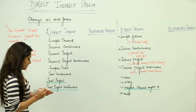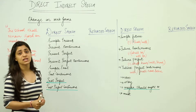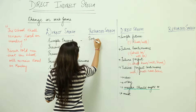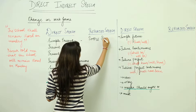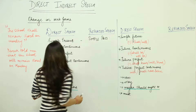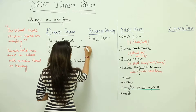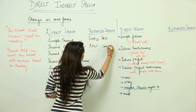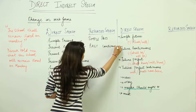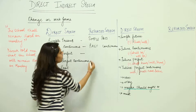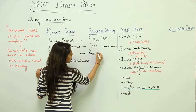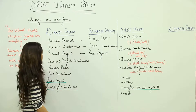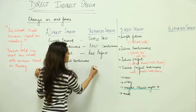Moving on. Simple present will get converted into simple past. Present continuous will get converted into past continuous. Present perfect will get converted into past perfect. Present perfect continuous tense will also get converted into past perfect.